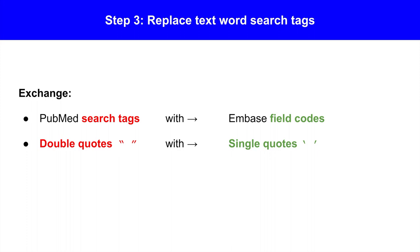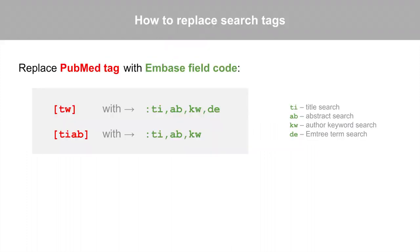Step 3: Replace the text word search tags. We need to exchange the PubMed search tags with Embase field codes. Additionally, exchange any double quotes with single quotation marks.